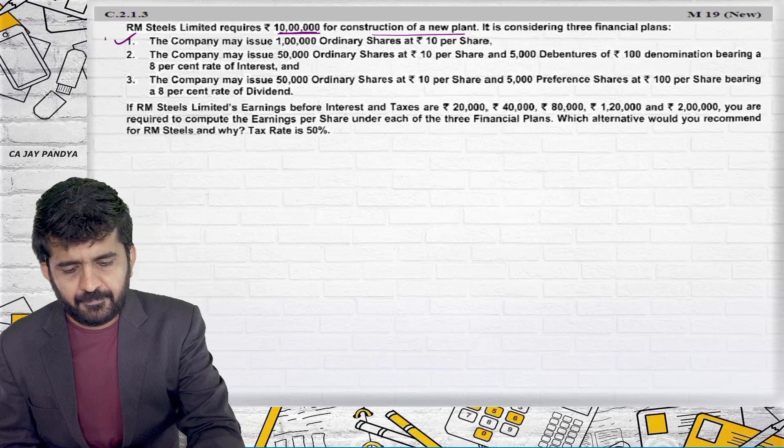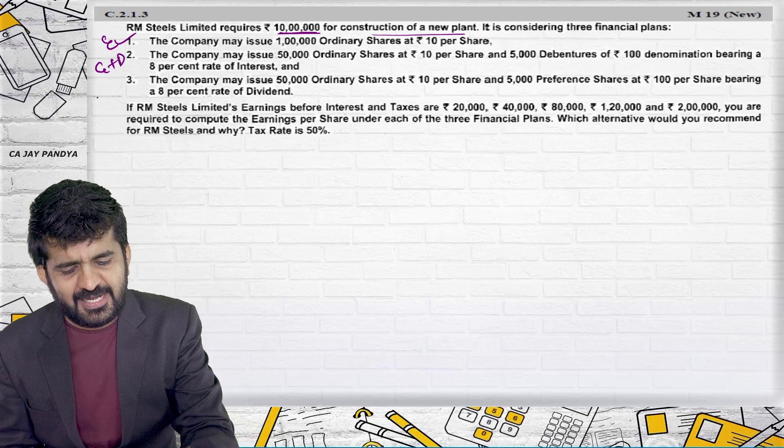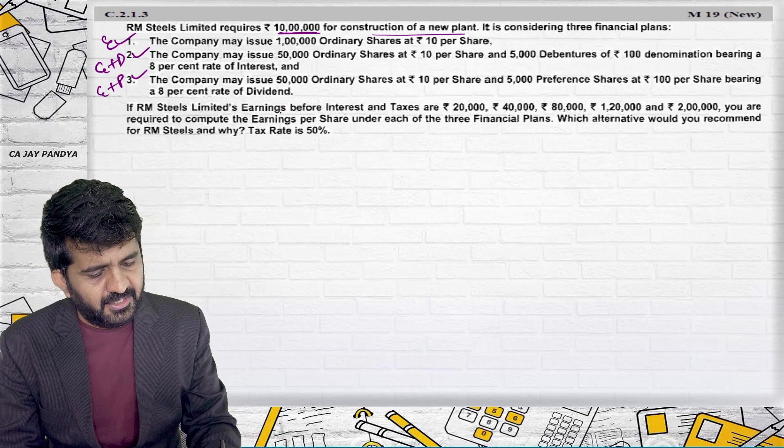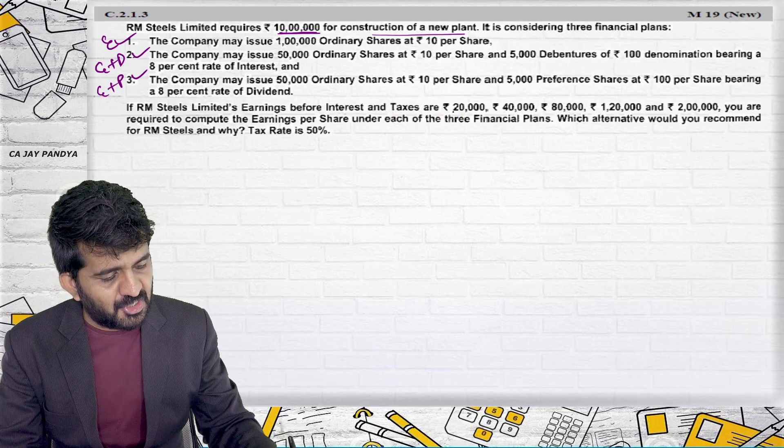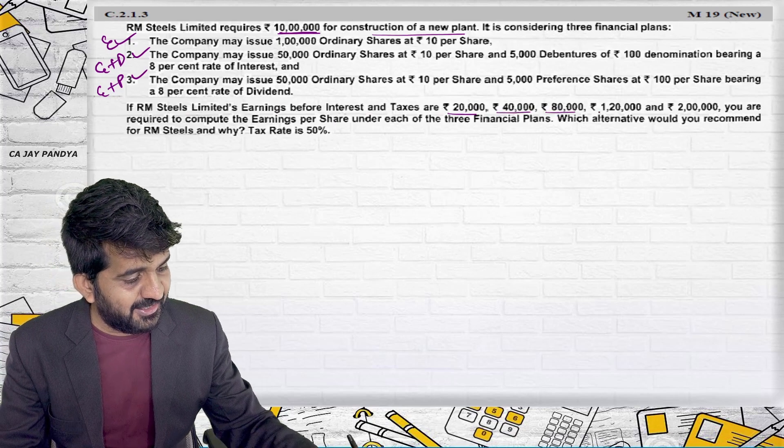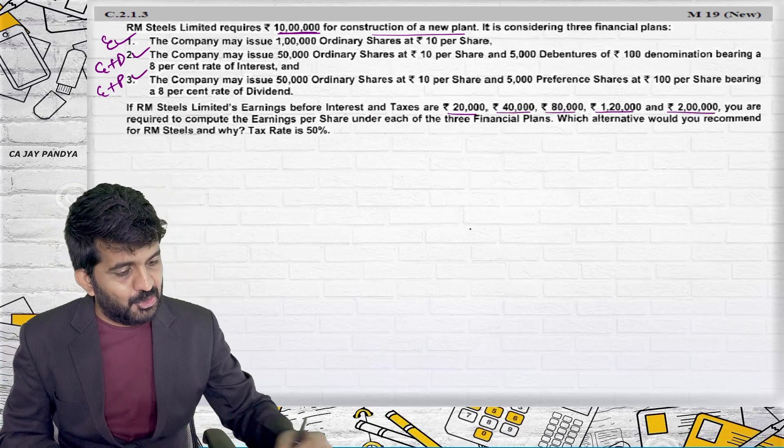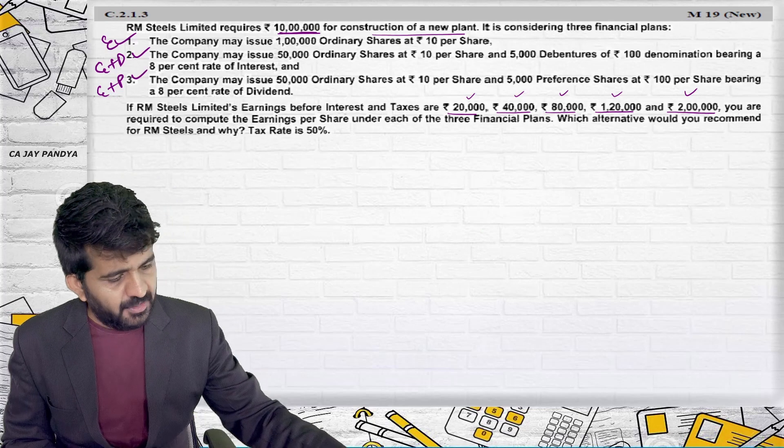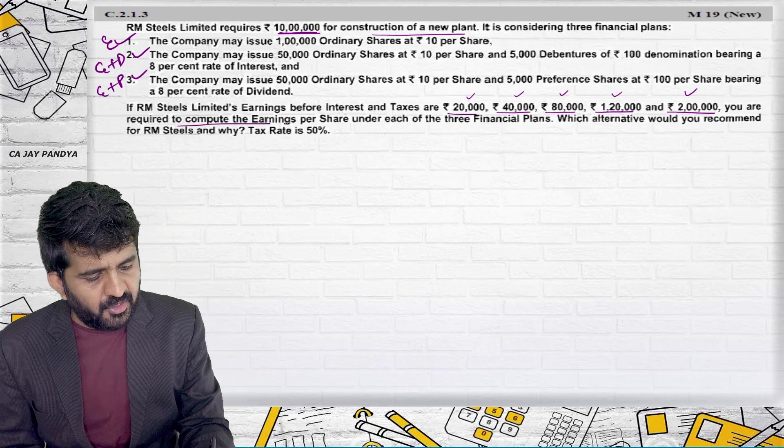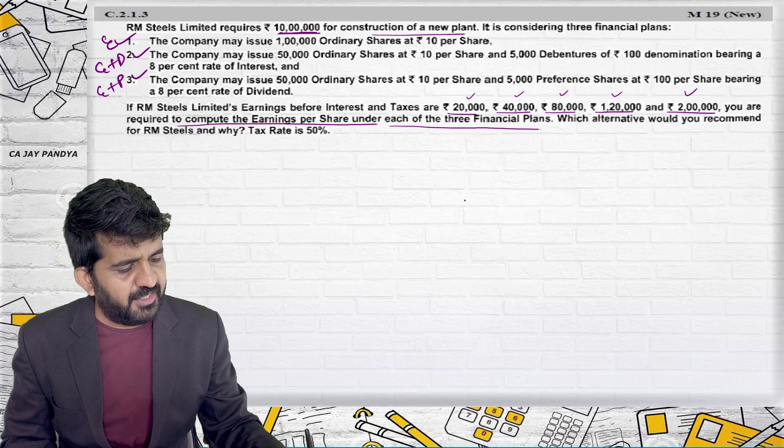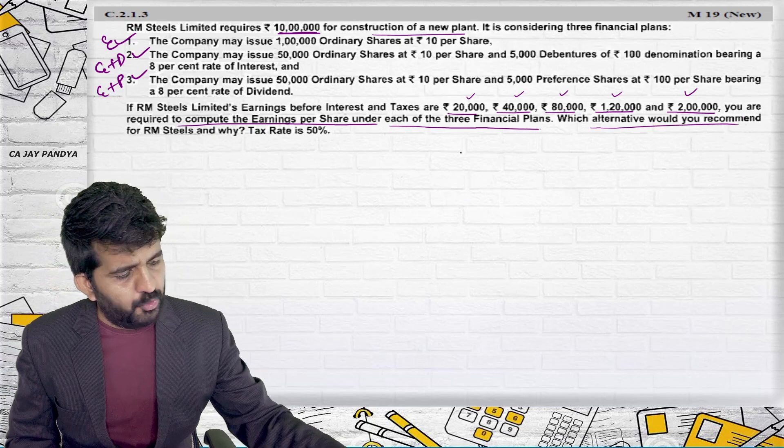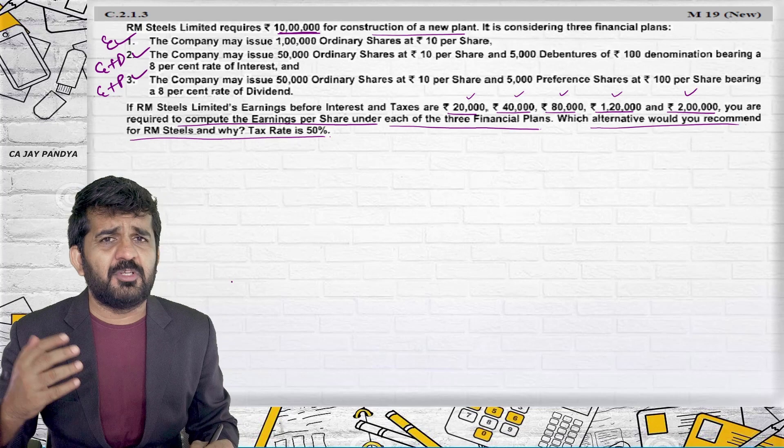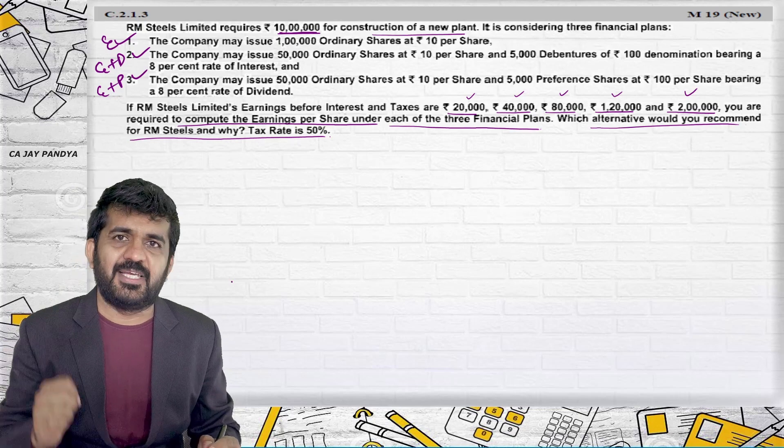So this is only equity. This is equity plus debt and this is equity plus preference shares, three different options. If RM Stills Limited earnings before interest and tax are 20,000, 40,000, 80,000, 1 lakh, 1,20,000 and 2 lakhs, you need to do questions 1 through 5. You are required to compute earning per share under each of three financial plans. Which alternative would you recommend for RM Stills and why if tax rate is 50%? PE ratio is not given. So practically, our objective will still remain to maximize EPS.